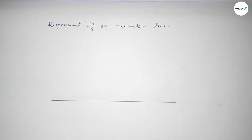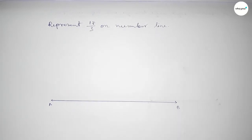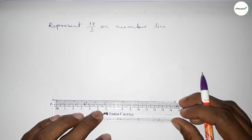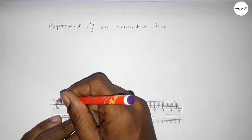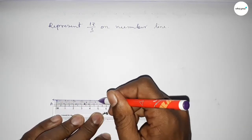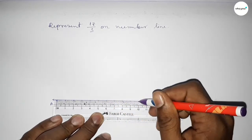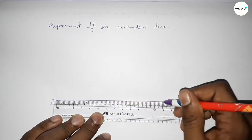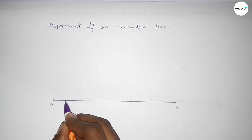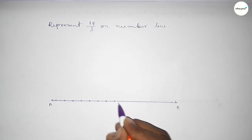First, draw a line taking arrow marks on both sides, and mark points A and B. Now mark the numbers on the line using a scale. Next, mark the numbers on the line again with deep color to understand perfectly.